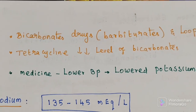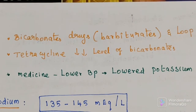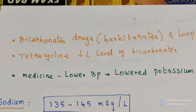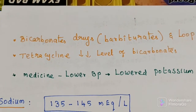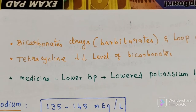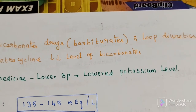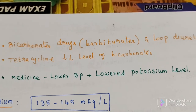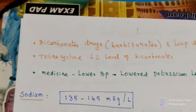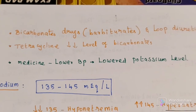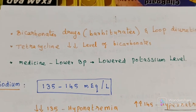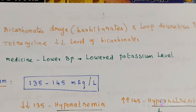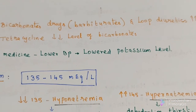For bicarbonate, drugs like barbiturates and loop diuretics can increase the level, while drugs like tetracycline can decrease the level of bicarbonate. Additionally, certain medicines given to lower blood pressure in patients can result in lowered potassium levels.